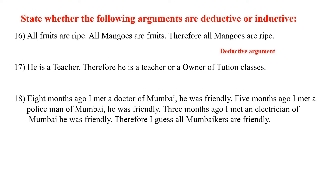He is a teacher; therefore he is a teacher or owner of the tuition classes. Here also, the conclusion is implicitly present in the premise, and the premises claim to provide sufficient evidence for the conclusion. So the argument is of deductive type.